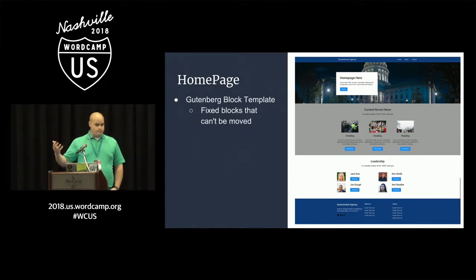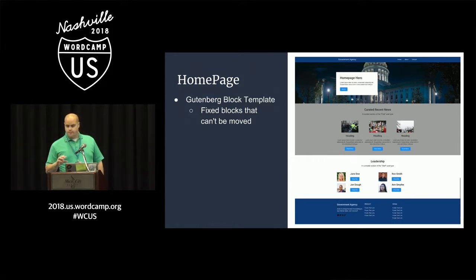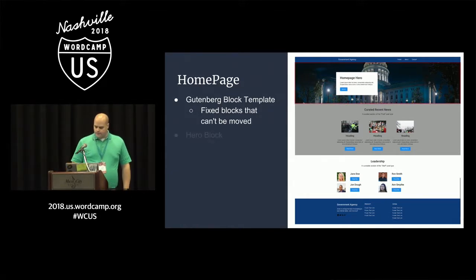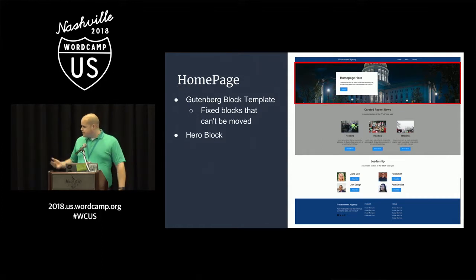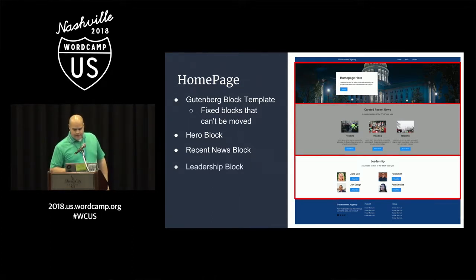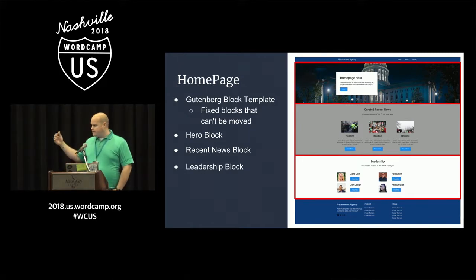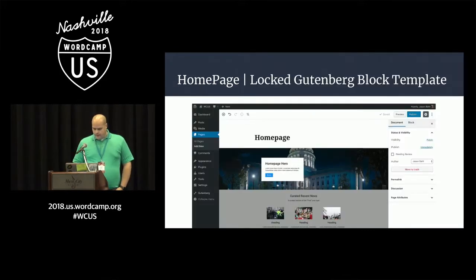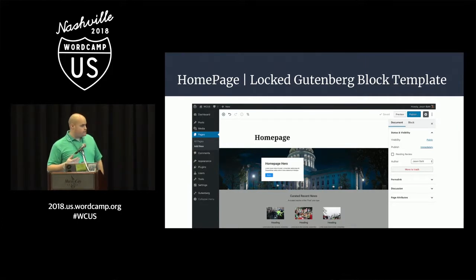Gutenberg has a feature called block templates where you can lock templates. You can build blocks, create a template, and lock it so that users can't drag and drop the blocks — it's just fixed to what you want it to be. In this example, we had a homepage hero block where they could edit in Gutenberg but couldn't drag it around; it was always the first block. Then we had a recent news block where they could curate news or just have it pull recent news from the post, and a leadership block where they could highlight leadership of the government agency. You can do this for your own Gutenberg sites if you wanted to.